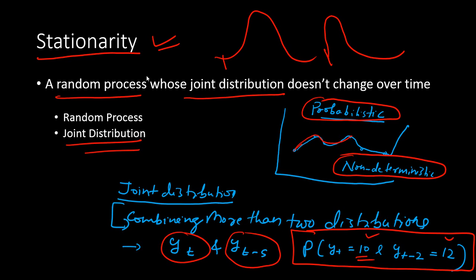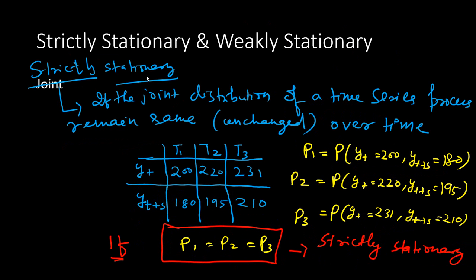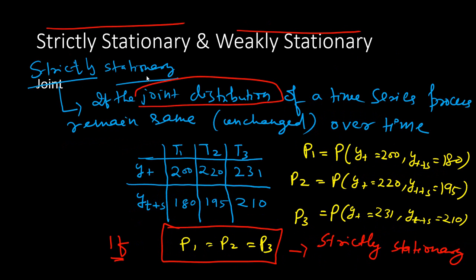We extend these two definitions — random process and joint distribution — to understand stationarity further by going into the details of strict stationarity and weak stationarity. A strictly stationary process is one where the joint distribution of a time series process remains unchanged over time.